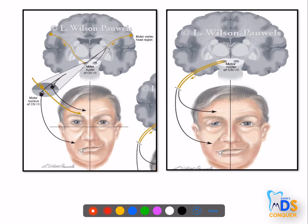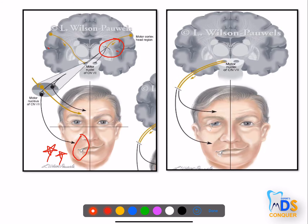In supranuclear type, for example, if the facial nerve is affected on one side, then the opposite side — specifically the lower part — shows symptoms, whereas the upper part and the same side remain normal. So supranuclear implies that the opposite side lower part is affected.